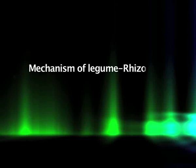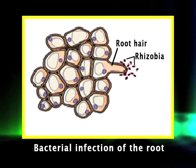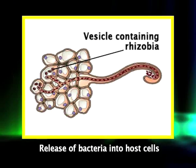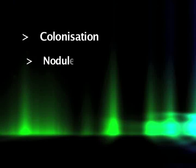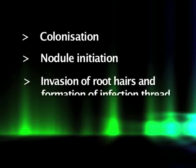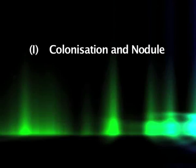Now we will discuss the mechanism of legume-rhizobium nitrogen fixation. The sequence of events beginning with bacterial infection of the roots and ending in the formation of mature nitrogen-fixing nodules has been studied extensively in legumes. Overall, the process involves multiple interactions between the bacteria and host roots and can be discussed in four principal stages: colonization, nodule initiation, invasion of root hairs and formation of infection thread, and finally the release of bacteria.